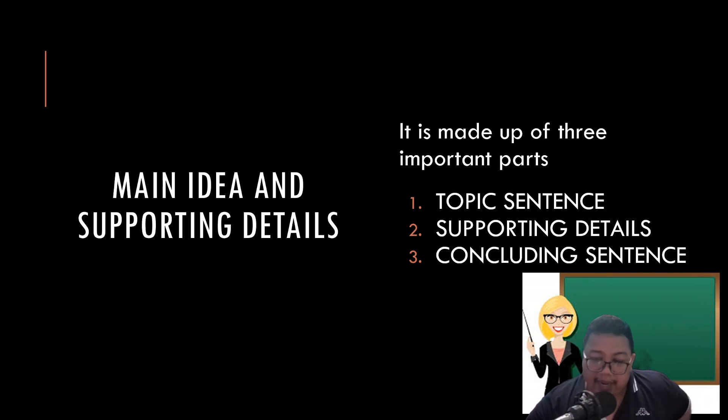You need to develop your reading skills because English involves a lot of reading and listening. So it's very good for you to be able to identify the main ideas and supporting details so that you'll be able to understand what a text is about. It is made of three important parts, usually in a paragraph. The first one, we have Topic Sentence, then we have Supporting Details, and then we have Concluding Sentence.